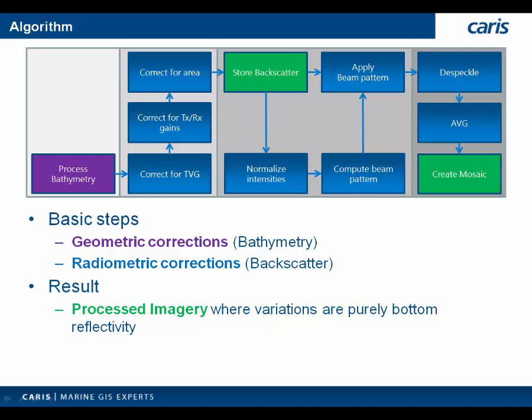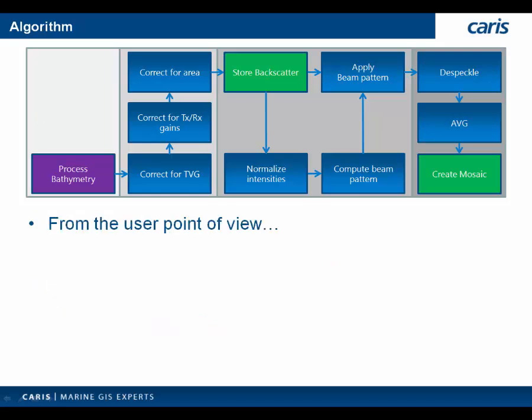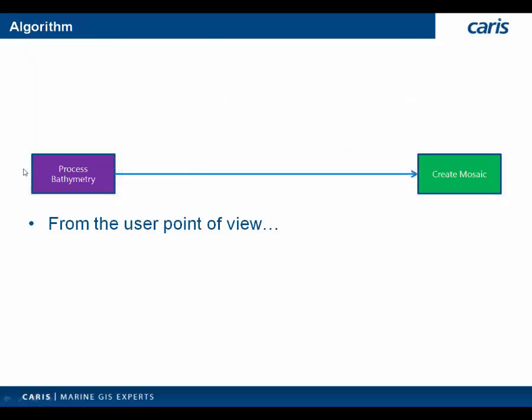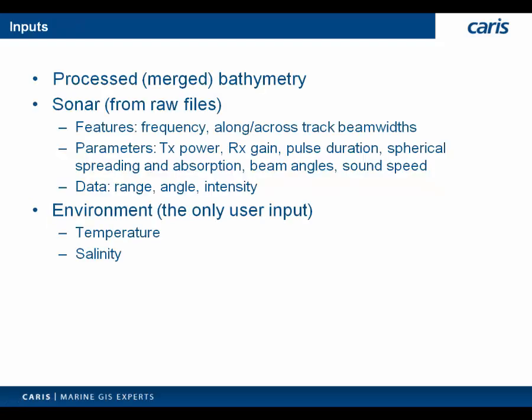As part of the simplified workflow, the geometric corrections are simply the multibeam bathymetry as you've already processed in HIPS, so there's no additional effort there. It's a single additional step after your standard multibeam processing workflow. We put in considerable effort to minimize input from the user. We read the processed bathymetry from HIPS, and from the raw data we pull in all applicable real-time sonar parameters including operating frequency, beam widths, transmit power, and received gain. The only input required from the user is the local temperature and salinity, which we use to apply our time-varying gain correction.